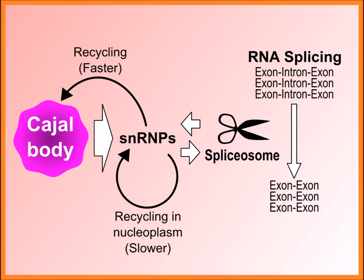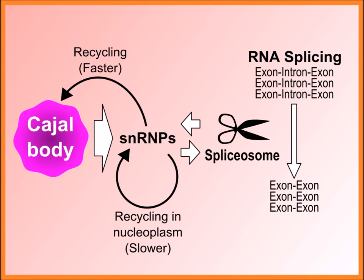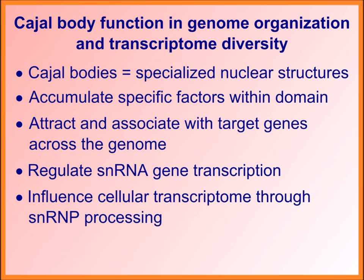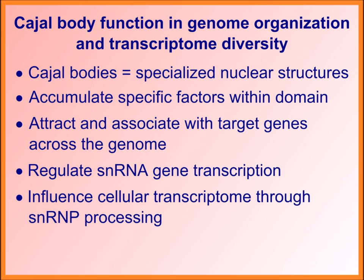However, this isn't the end of the story. As Cajal bodies regulate spliceosomal snRNP levels, when the structure is disassembled using specific siRNAs in cancer cells, we observe a decrease in mRNA splicing fidelity. Thus, the Cajal body is capable of influencing the cellular transcriptome by regulating small RNA diversity in cells, small RNA modifications, as well as protein-encoding mRNA splicing accuracy.